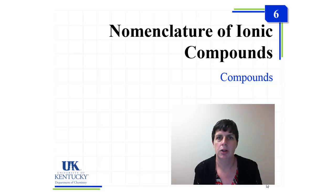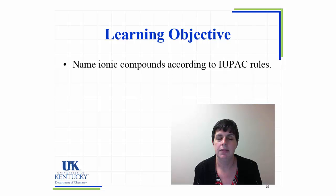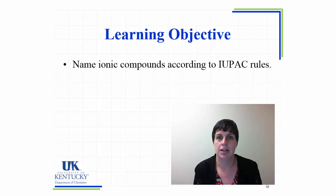In this module we are going to talk about the nomenclature of ionic compounds. By the end of this module you should be able to name ionic compounds according to the IUPAC rules. IUPAC stands for the International Union of Pure and Applied Chemistry, and this group decides the nomenclature rules, determines when a new system is needed, and determines which new synthetic elements should be added to the periodic table.